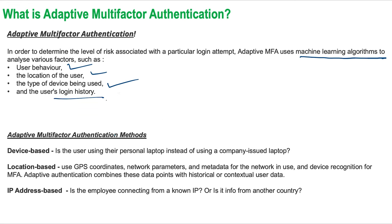This means the system can automatically prompt users to provide additional forms of identification if the risk level is high, or allow users to bypass certain authentication methods if the risk level is low. Adaptive authentication takes advantage of real-time analytics to get a complete picture of the circumstances surrounding each login. When a user tries to sign in, the system looks at things like device verification.